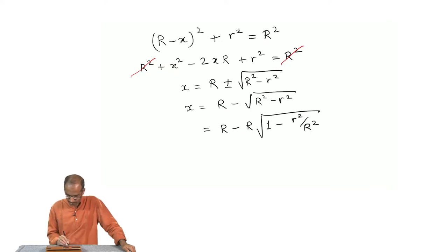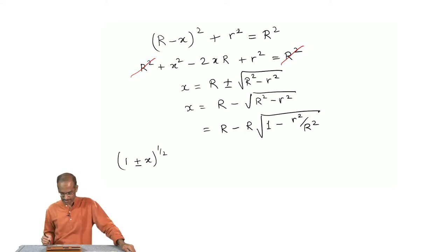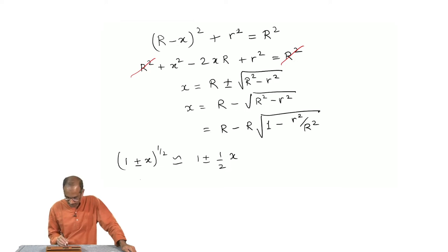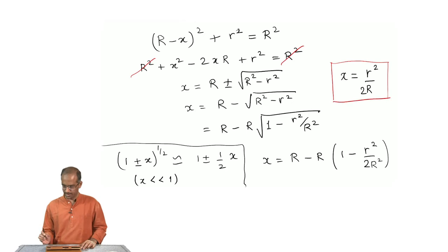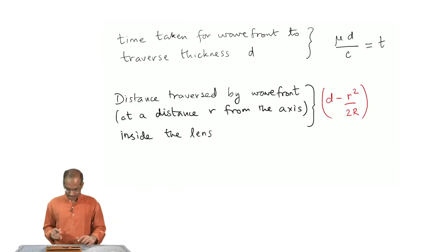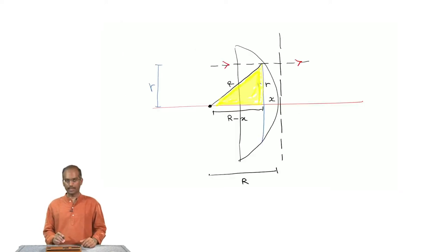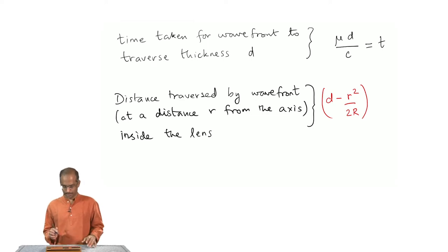The binomial approximation is of the following type: if I have a function of this type 1 plus x to the power half, this will approximately be equal to 1 plus half into x. It is actually an infinite series which we are terminating at this point and this approximation would work only if x is much smaller than 1. This is the result that we want. The distance traversed by the wavefront at a distance r from the axis inside the lens is given by d minus r square by 2R.